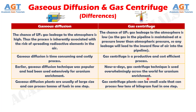Difference number 8. Gaseous diffusion plants are usually of large size and can process tons of fuel in one step, whereas gas centrifuge plants can be small-scale and can process a few tens of kilograms of fuel in one step.